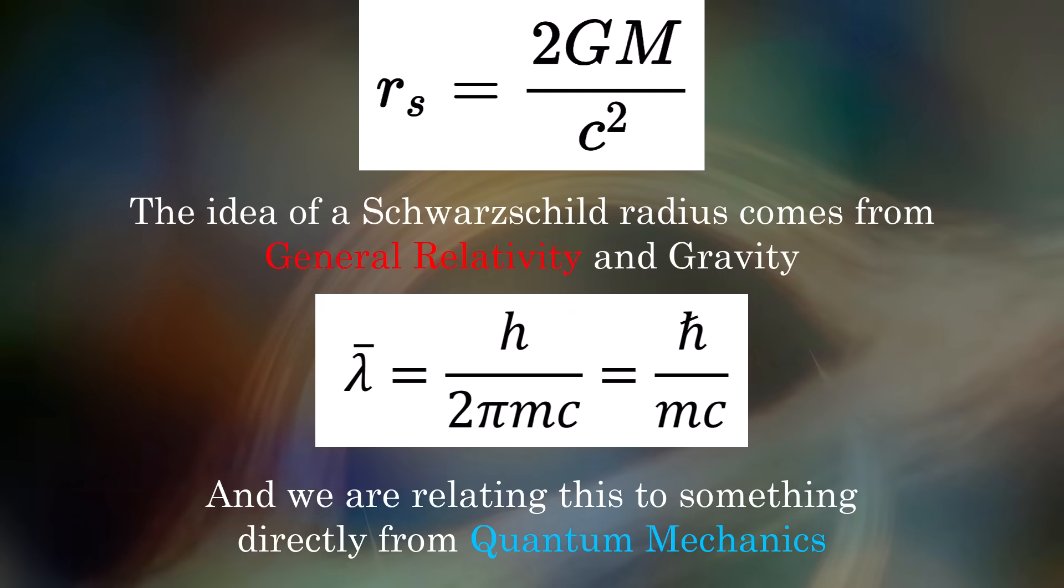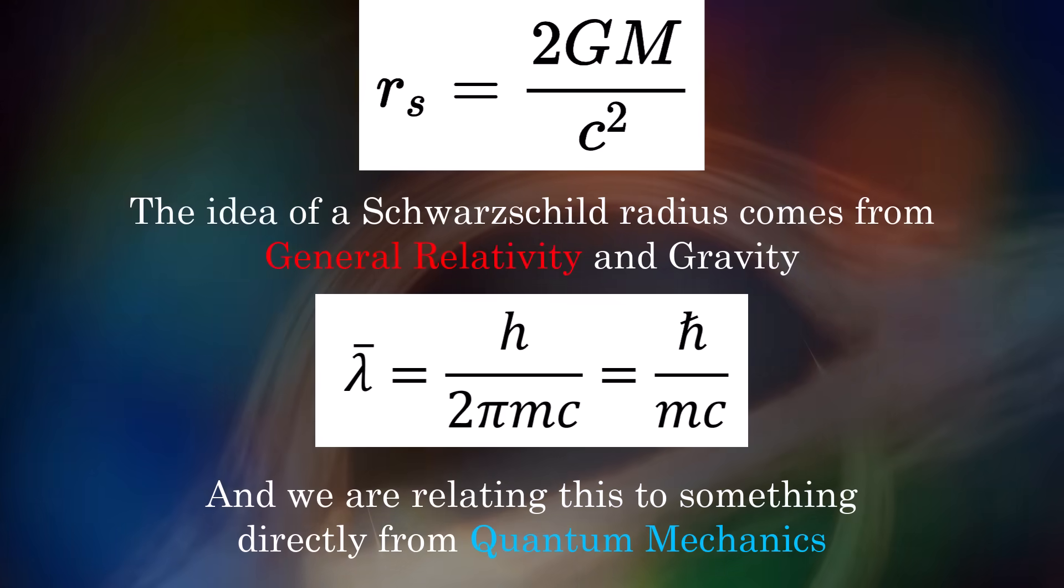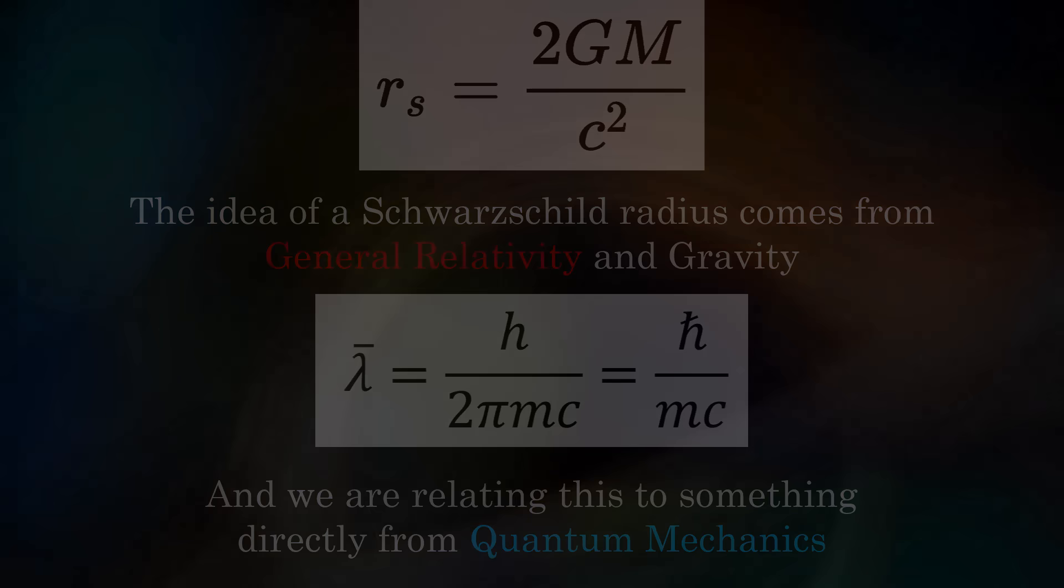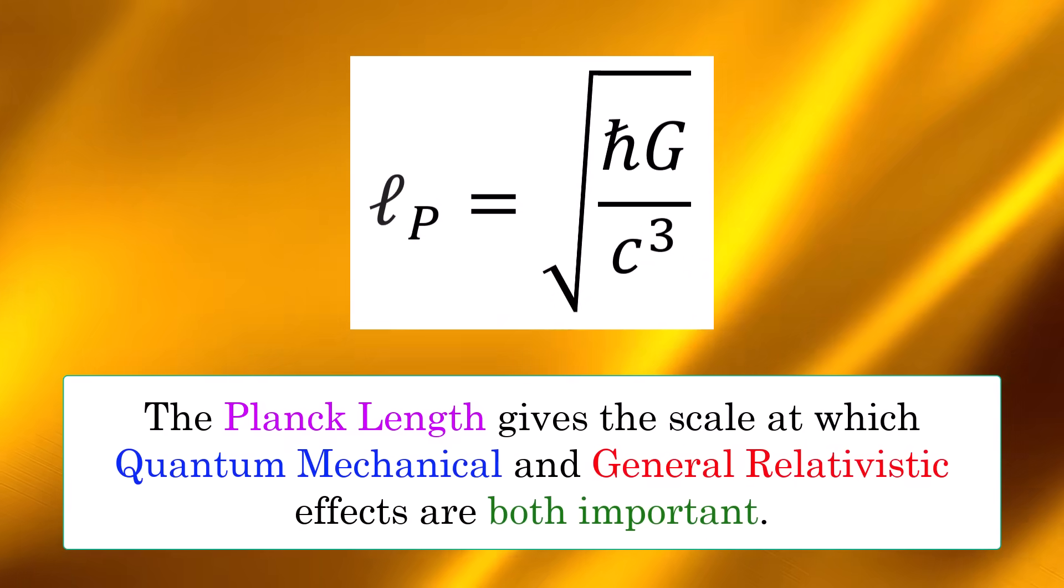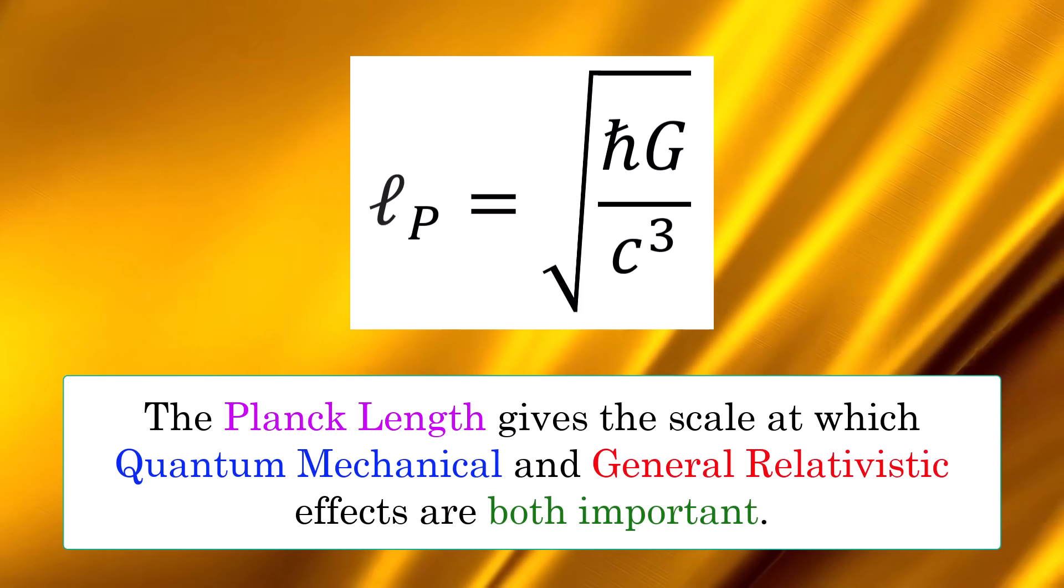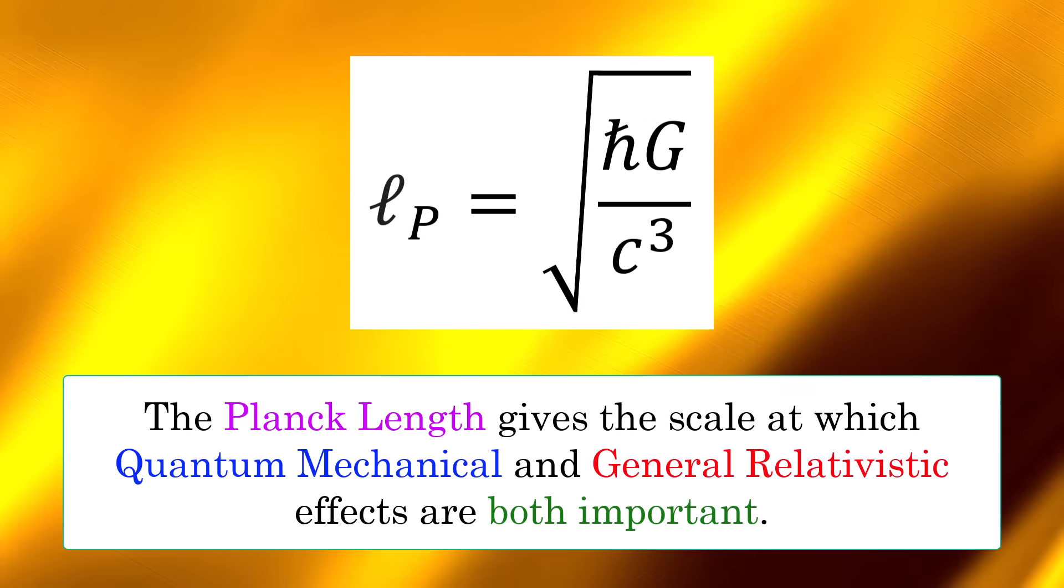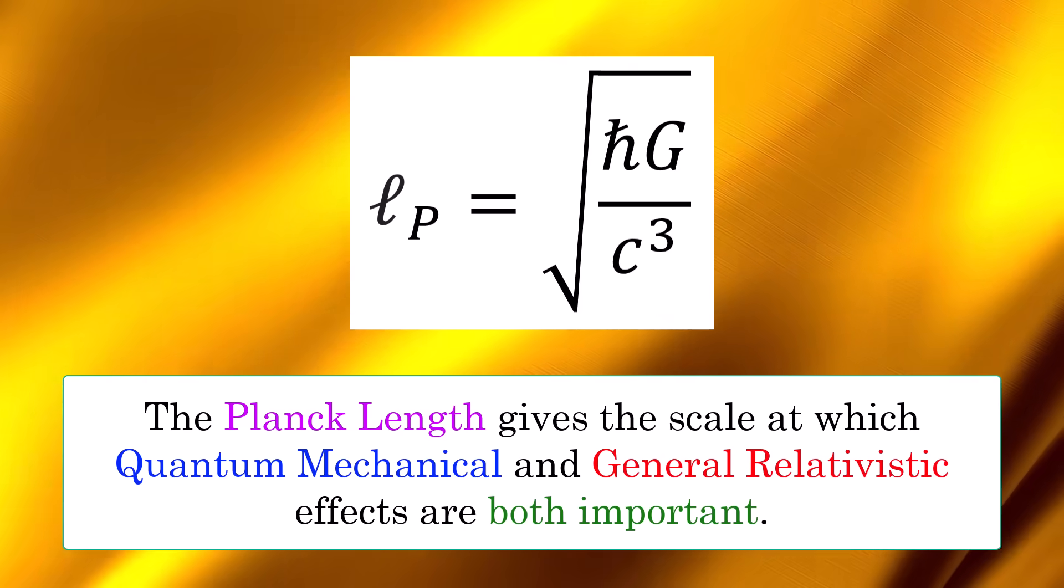Considering a length where a particle's Schwarzschild radius is comparable to its Compton wavelength gives us the Planck length. I hope you can therefore see that it's not an arbitrary length but rather the scale at which quantum mechanical effects and gravitational effects are both noticeable and important simultaneously.